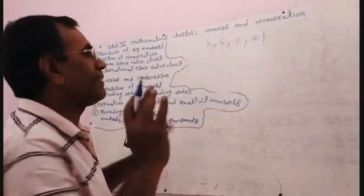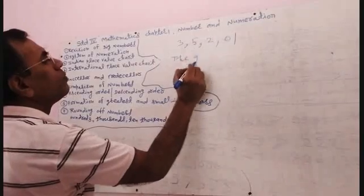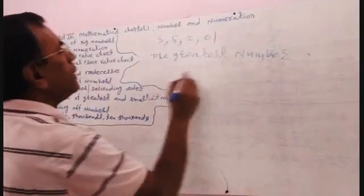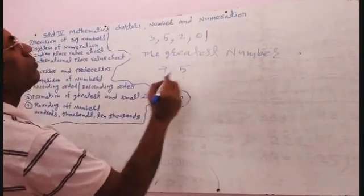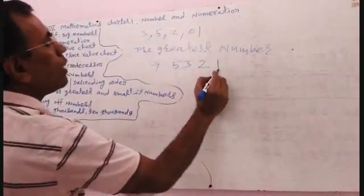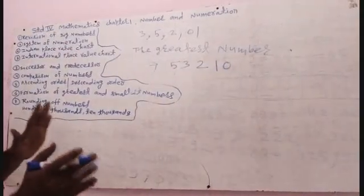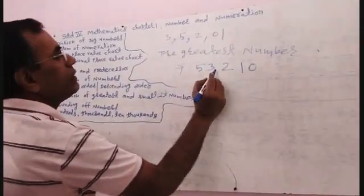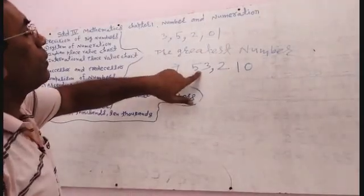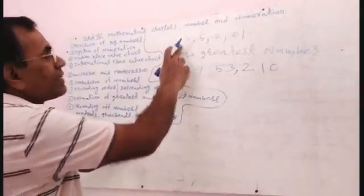To form the greatest number, you have to write the greatest digit first. So: 5, then 3, then 2, then 1, then 0. You can also arrange according to the Indian place value chart — after three digits write a comma. So the greatest number is 53,210. This is the biggest number prepared from these digits.